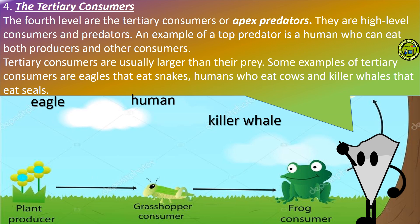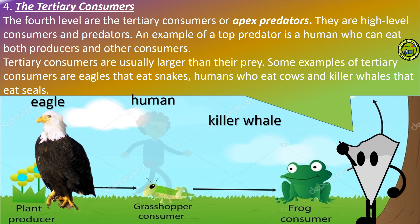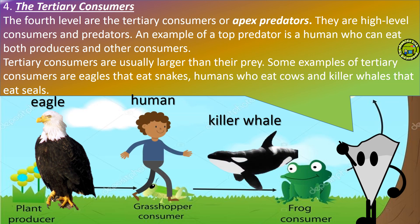Four, the tertiary consumers. The top level are the tertiary consumers or apex predators. They are high level consumers and predators. An example of a predator is a human who can eat both producers and other consumers. Tertiary consumers are usually larger than their prey. Some examples of tertiary consumers are eagles that eat snakes, humans who eat cows, and killer whales that eat seals.